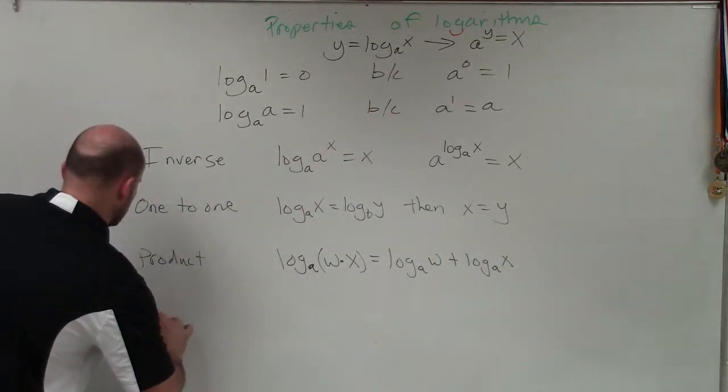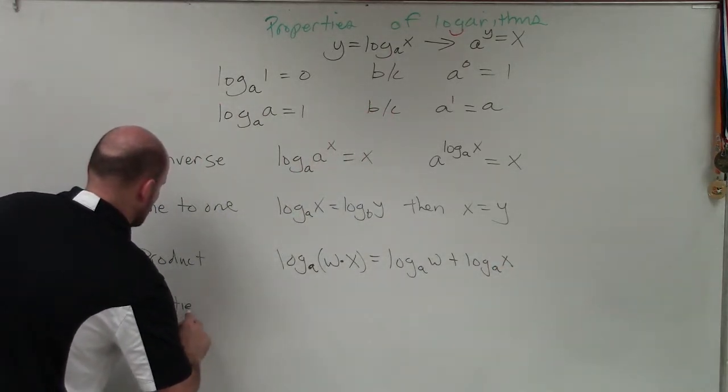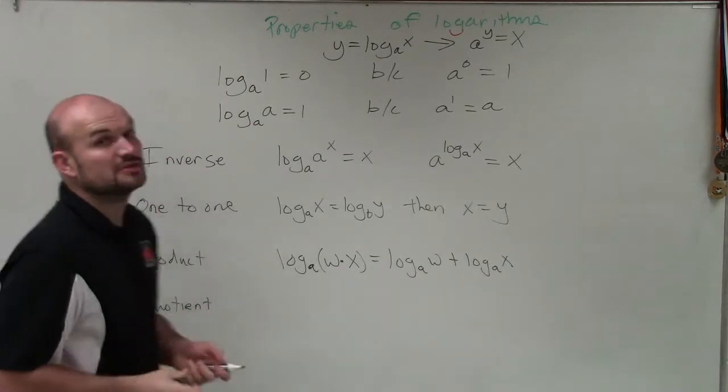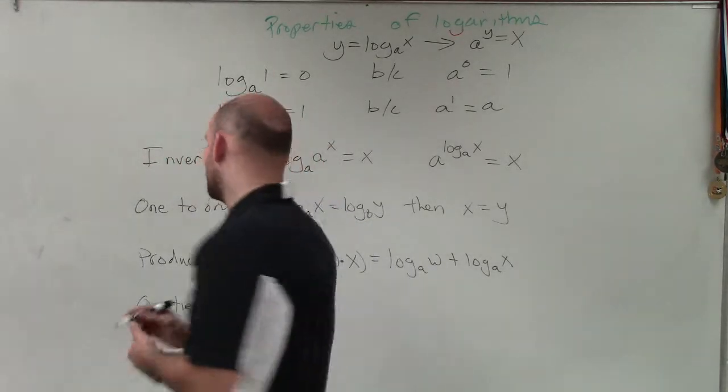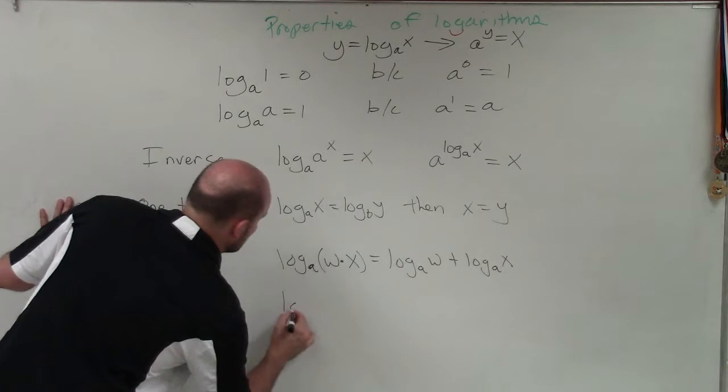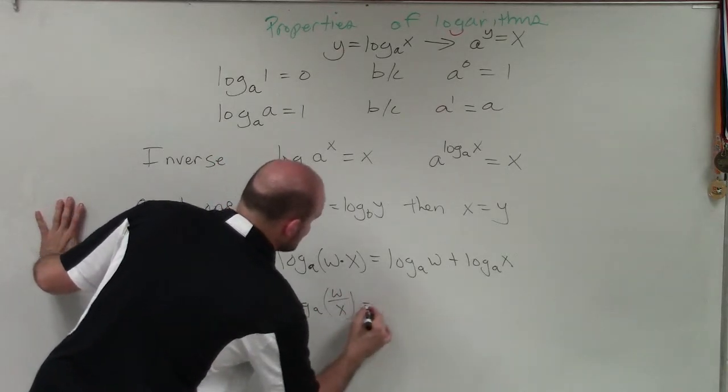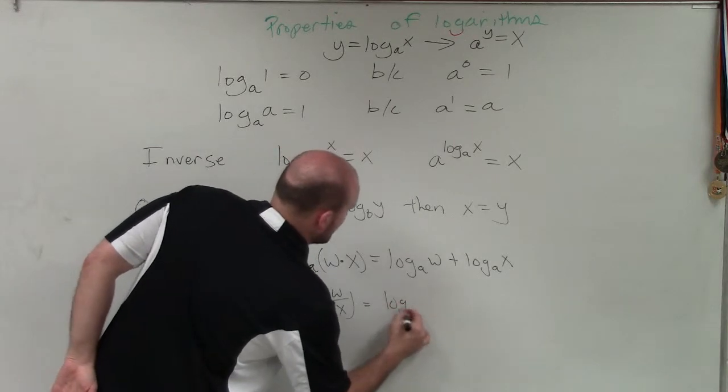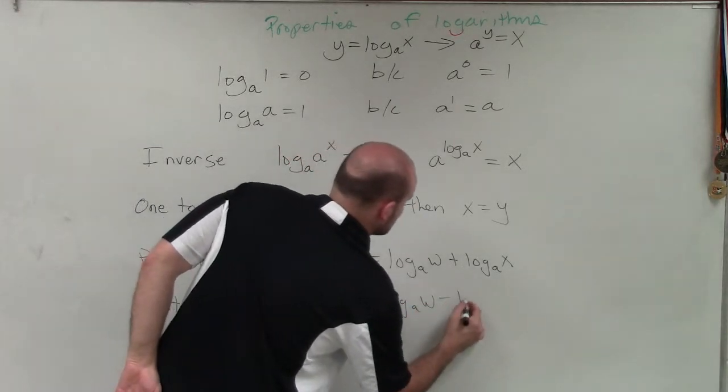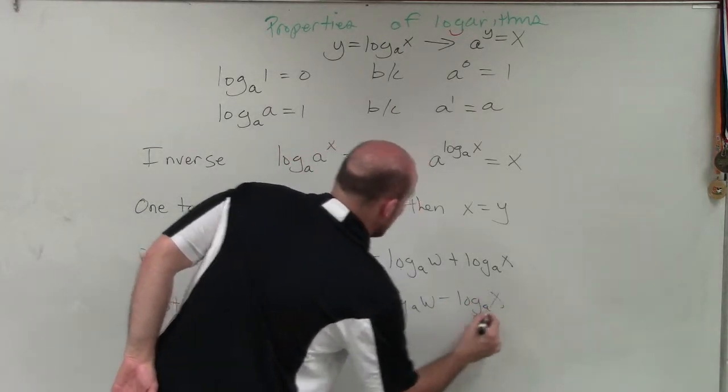Then we have the quotient rule, which again is very similar to the quotient rule with exponents, where it simply states, if I have log base a of w divided by x, that is equal to log base a of w minus log base a of x.